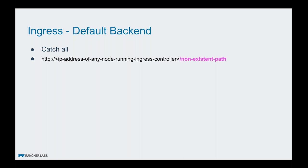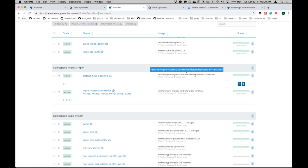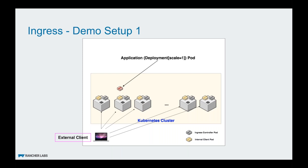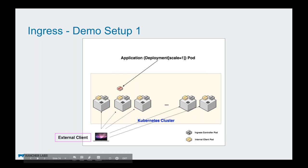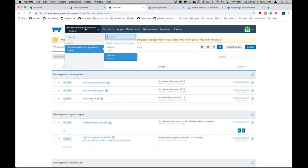Let's switch to the default project. I already have an application called alpha and I just want to use that instead of creating a new application. So what I can do is create an ingress by going to the load balancing tab, then click on add ingress and specify what this is — so this is alpha ingress. I'll specify a hostname, choose the workload and the port — I believe it is 91 — and save it. It takes a few seconds for this to become active.